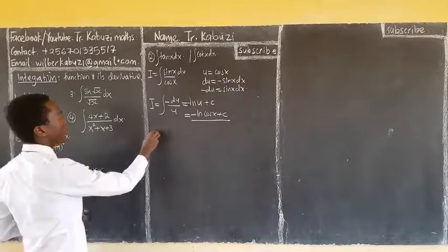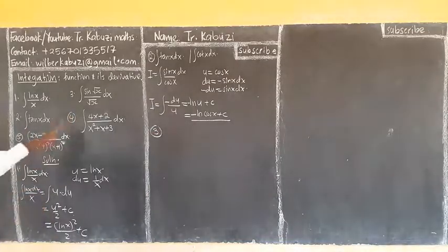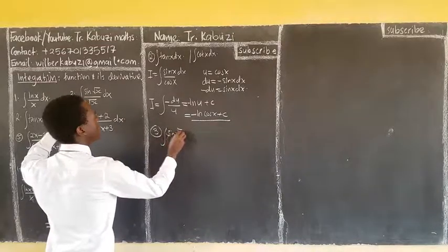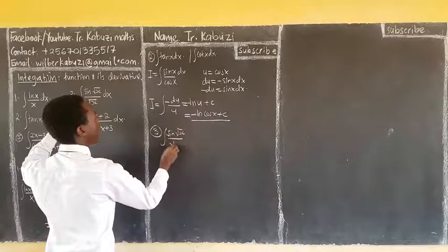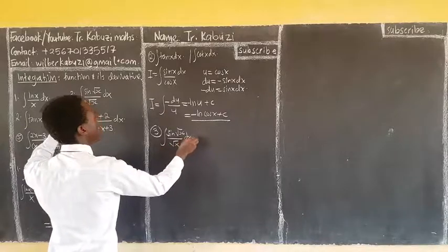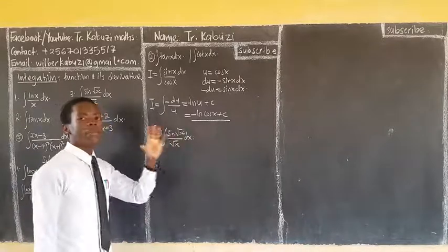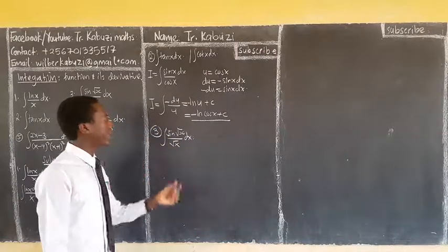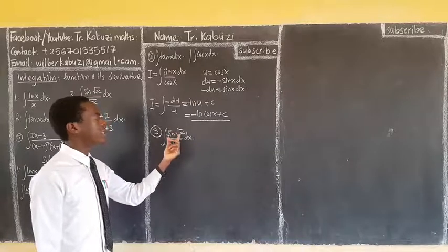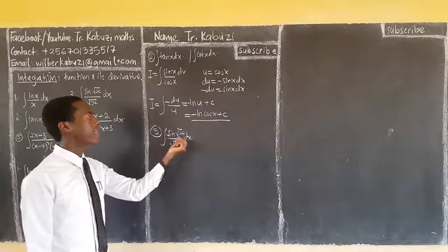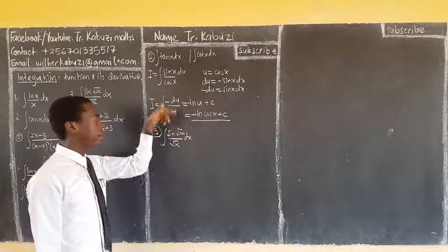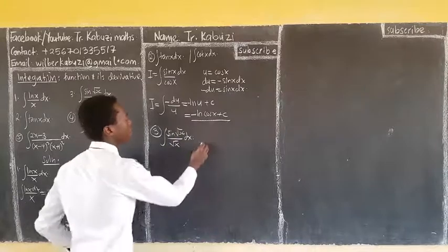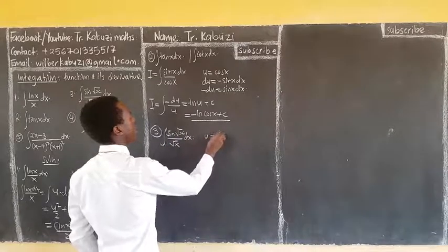Now we come to number 3: the integral of sin(√x) over √x dx. Notice that the angle √x is not linear, so we need substitution. The angle is the problem, so we set it up so that one part becomes the function and the other becomes the derivative. Let u equal √x.